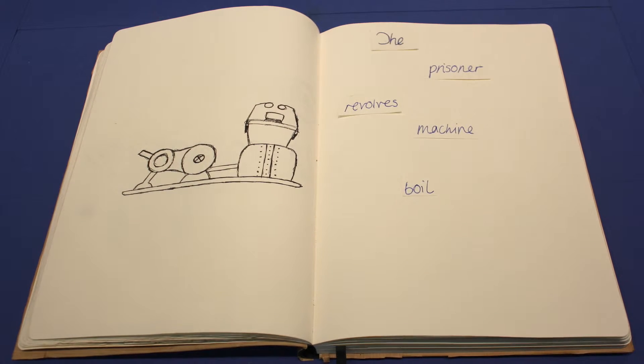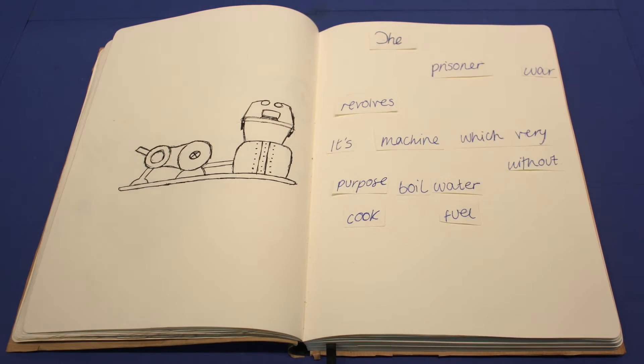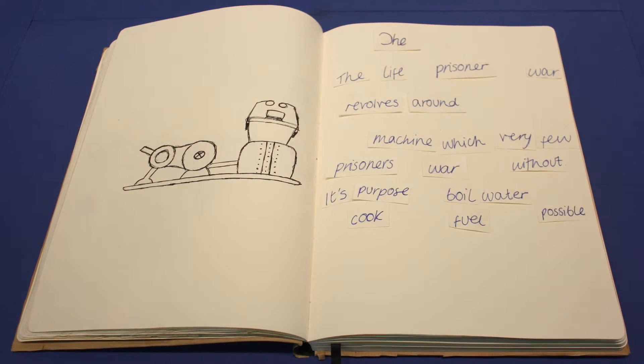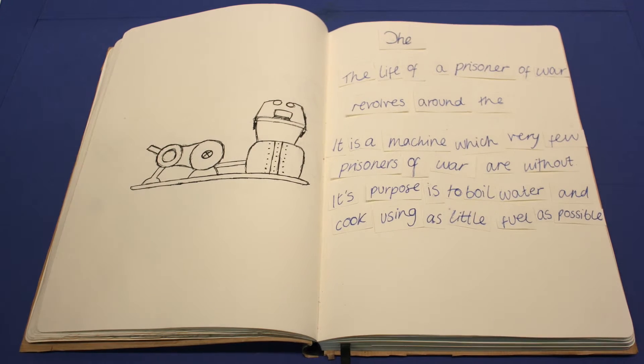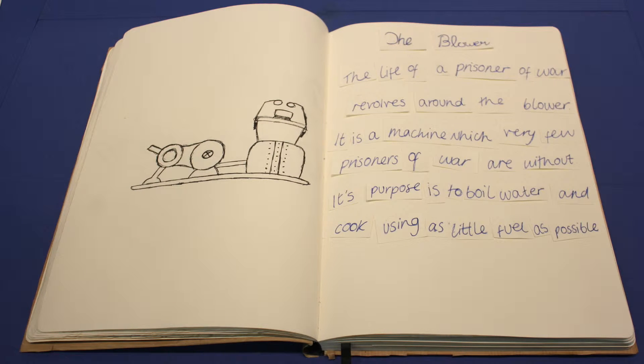The life of a prisoner of war revolves around the blower. It's a machine which very few prisoners are without. Its purpose is to boil water and cook using as little fuel as possible.